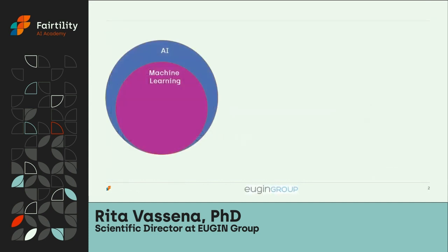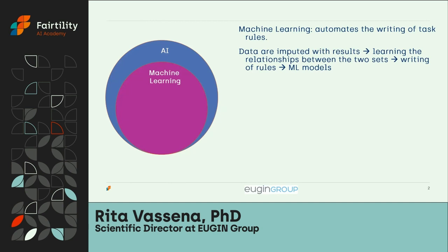First, just a few words about machine learning, which is a type of AI that automates the writing of task rules necessary to complete an action. In a classical machine learning setup, data are first inputted with results so that the machine learns the relationship between the two sets — the input data and the results related to it. By finding this relationship, rules are written, which turn out to be machine learning models.